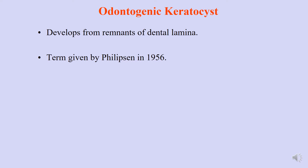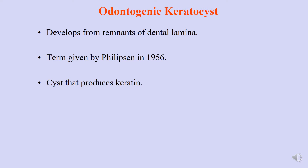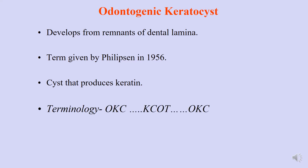The term odontogenic keratocyst was given by Philipson in 1956. As the term clearly indicates, it is a cyst that produces keratin. 'Odontogenic' means it is developmental from odontogenic epithelium, and 'keratocyst' clearly indicates that it produces keratin.